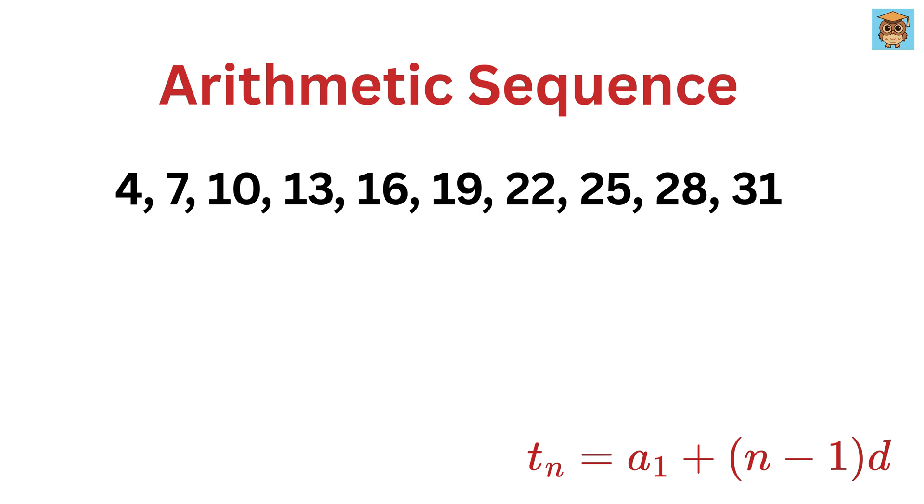In our given example, the first term is 4 and the common difference is 3. Now suppose if we want to find the 7th term, which means we want to find the term or number at position 7, or n equals 7, then we plug these into the formula. So t7 equals 4 plus 7 minus 1 times 3. That's 4 plus 6 times 3 or 4 plus 18, which gives 22. So the 7th term is 22.